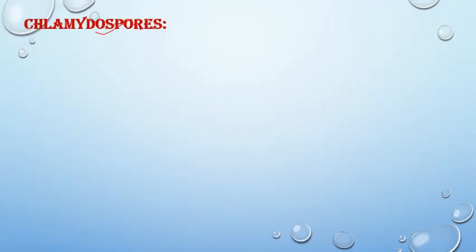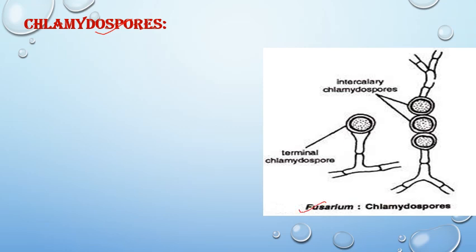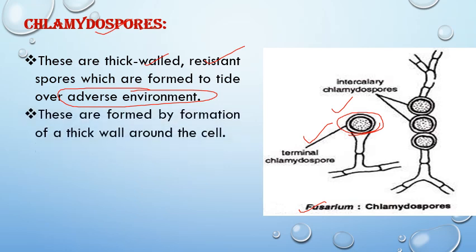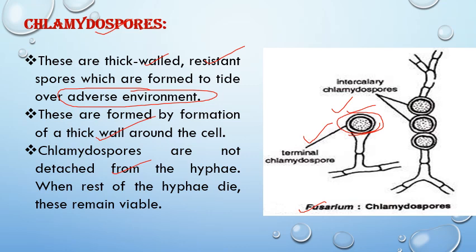Chlamydospores are thick-walled, resting spores produced under harsh environmental conditions, as seen in Fusarium. These are terminal in deposition and produced on a stalk-like structure. They are formed by the formation of a thick wall around the cell, which helps in protection from harsh environmental conditions. When the rest of the hyphae disintegrate, these spores are released and remain viable for long durations, germinating when favorable conditions return.